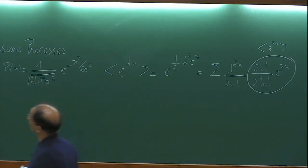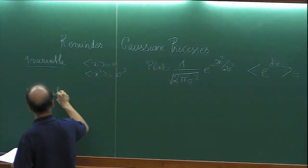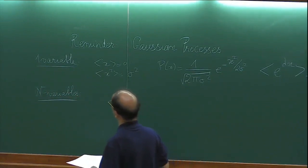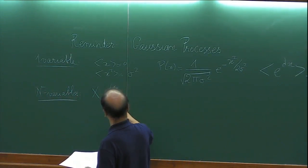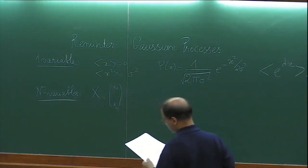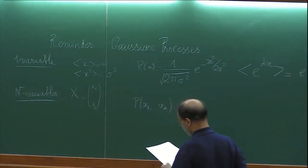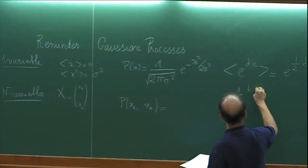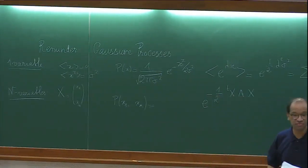Moving to n variables — again useful to set up notations. I have a Gaussian vector X with n components x₁, …, xₙ, and I will write its probability distribution using matrix notation. The exponent is −½ Xᵀ A X, where A is a positive definite matrix so that everything converges. The normalization involves the determinant of A.